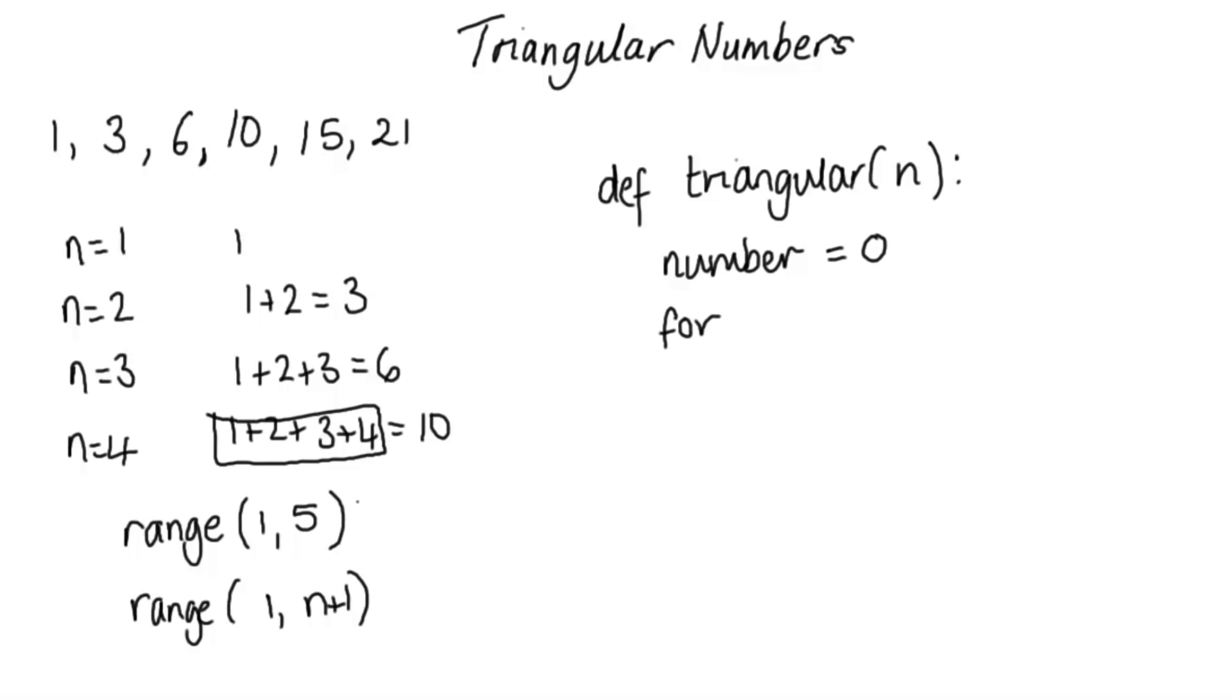So we want to loop through all the numbers 1 up to n in the range. Don't forget the plus 1 there to make sure we go up to n. And we're just going to add each of the values, i, as we come to it in the loop. And then when we're done, we're going to return the number.